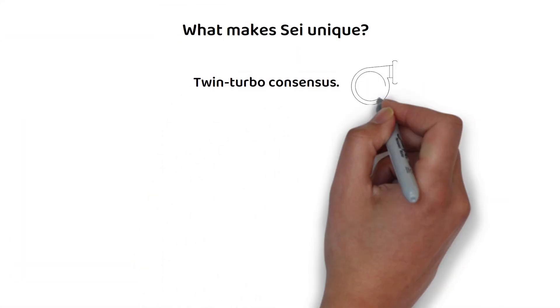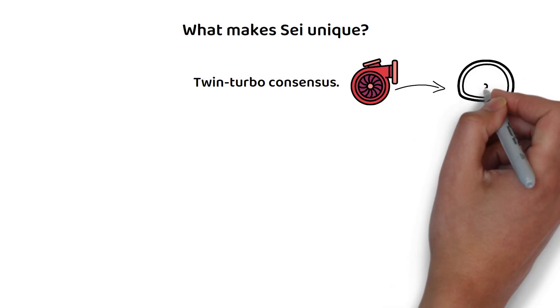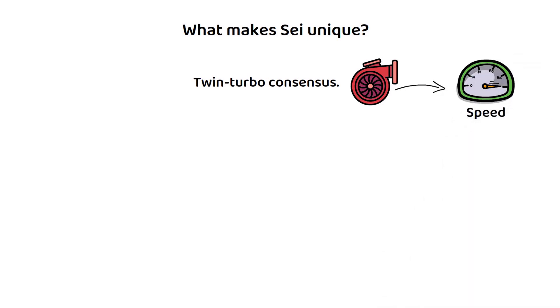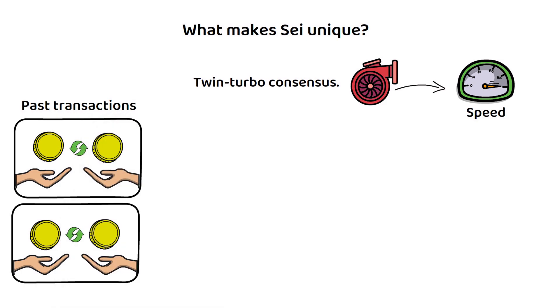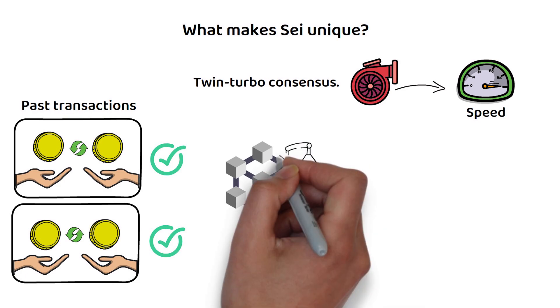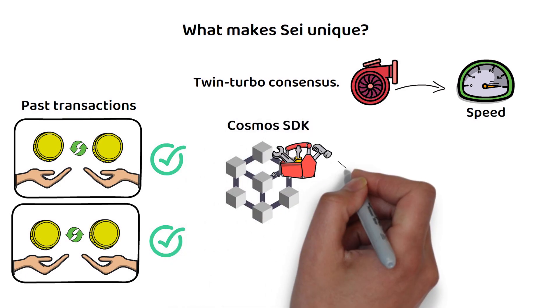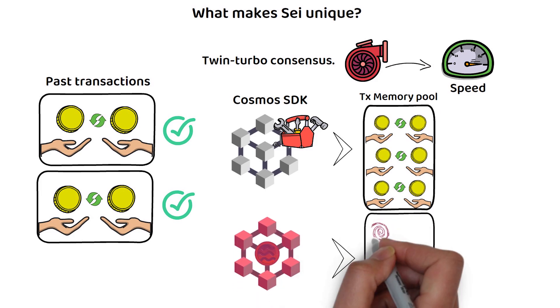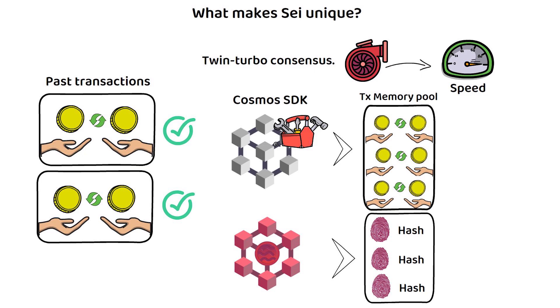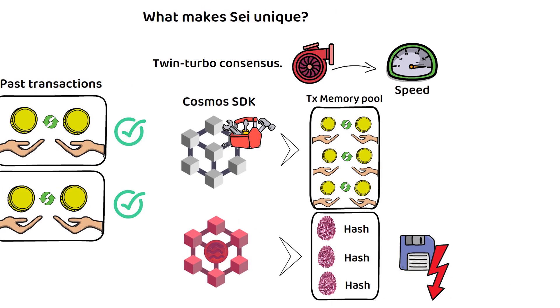Twin Turbo consensus is what gives SAI its speed. In short, SAI doesn't store all previous transactions as transactions. As these have already been verified and all blockchains built using the Cosmos SDK use the same memory pool of transactions, instead it can simply store a hash of these transactions, which proves its authenticity but massively reduces the size of the data.